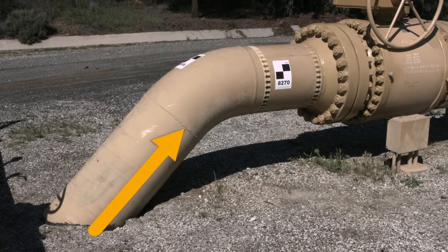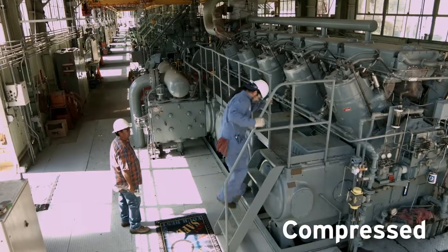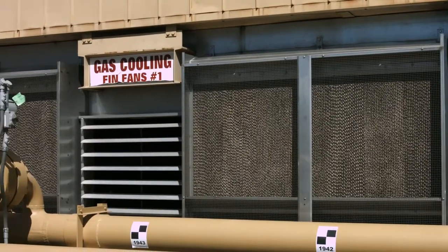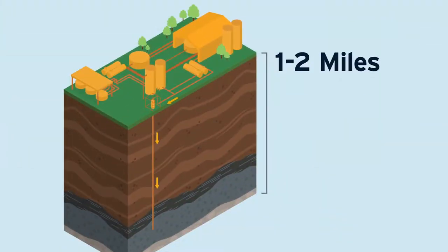The storage process begins when natural gas is pulled from the transmission pipeline, compressed, and cooled before being injected into the natural storage reservoir located one to two miles beneath the surface. That's a depth greater than 20 football fields.